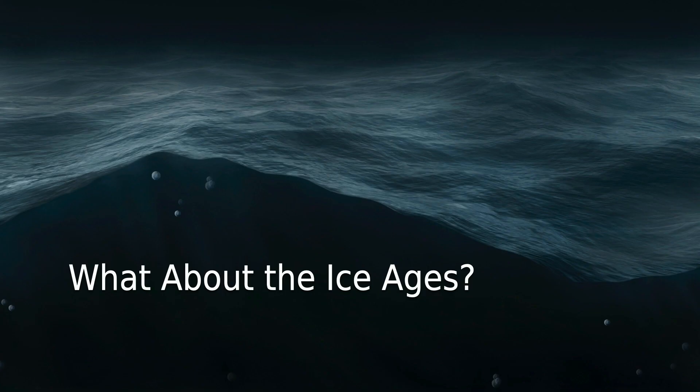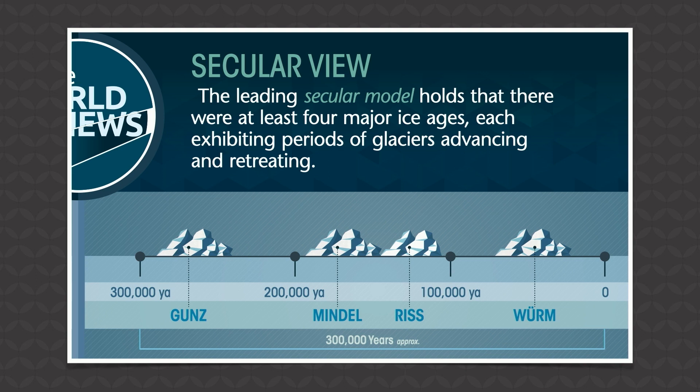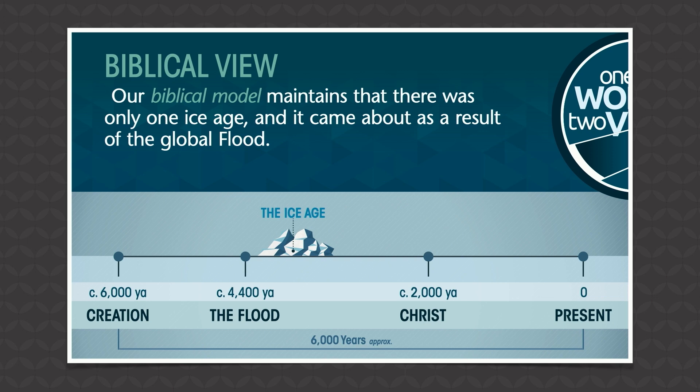We now want to talk about dating methods. But first, I want to mention something about the Ice Ages. The secular view is that there have been at least four major ice ages separated by thousands, tens of thousands of years, and they advanced and retreated. But in a biblical view, there's only one ice age, and we think it was post-flood, caused by the conditions at the end of the flood.